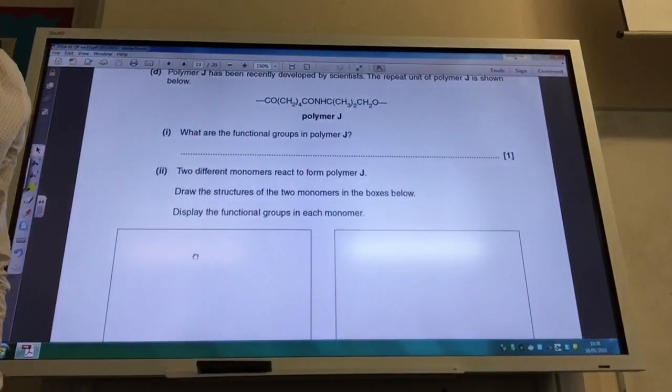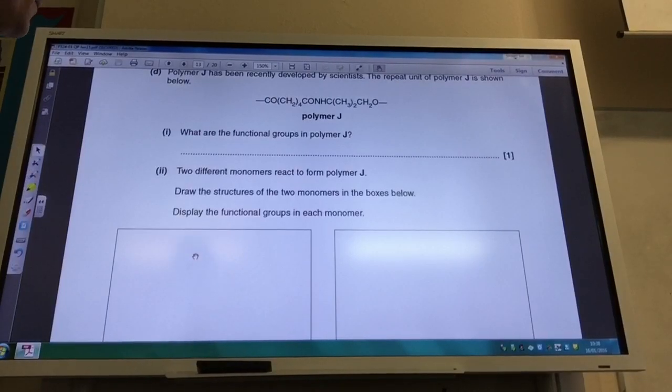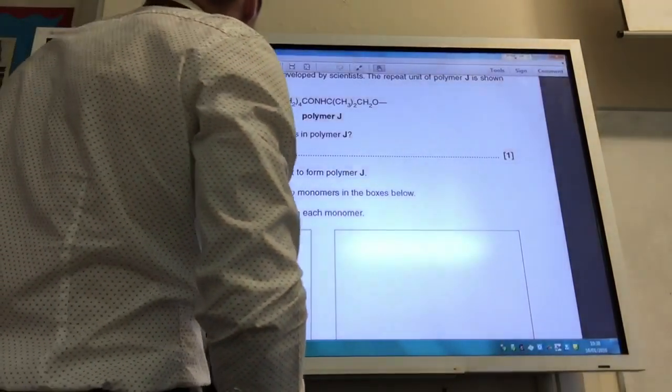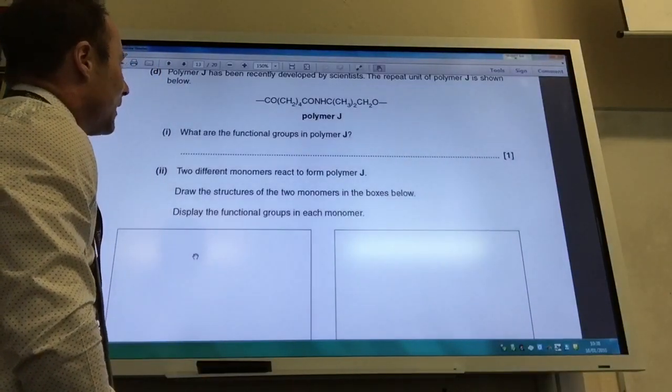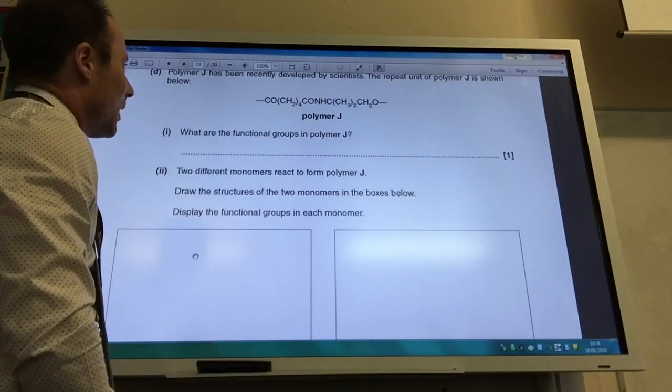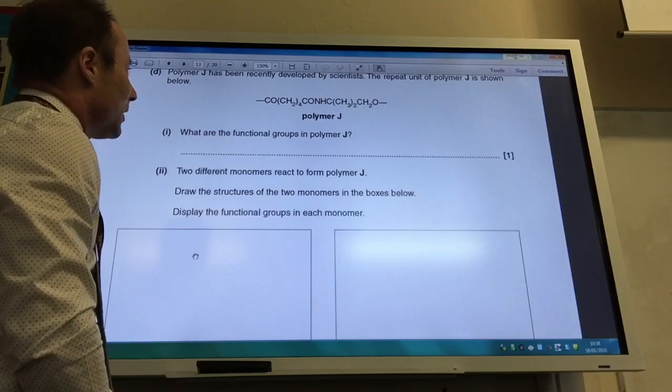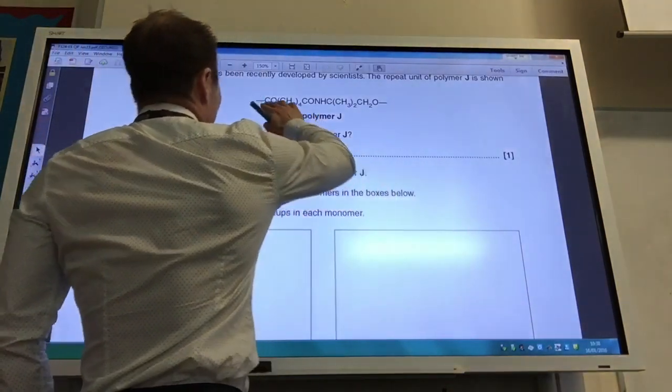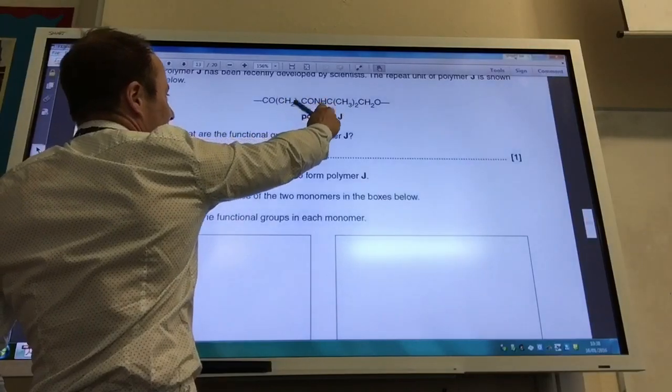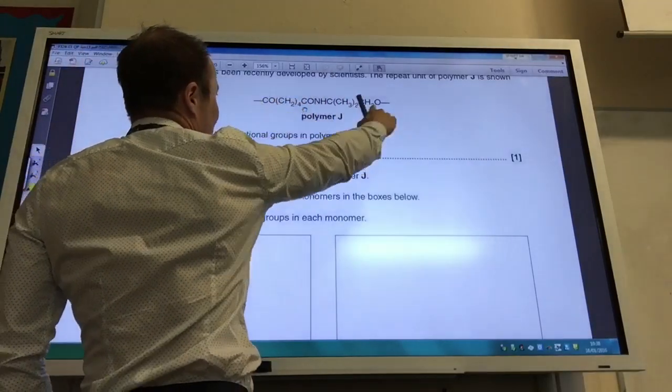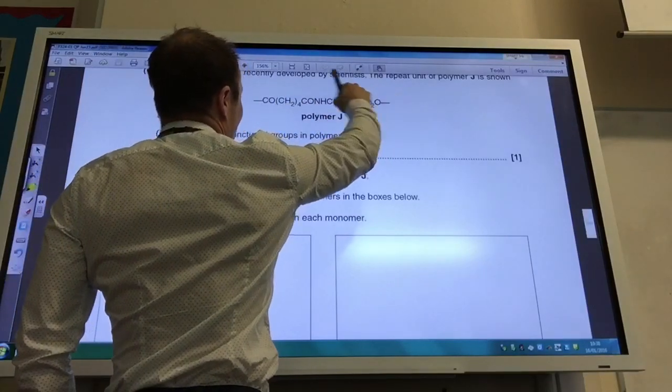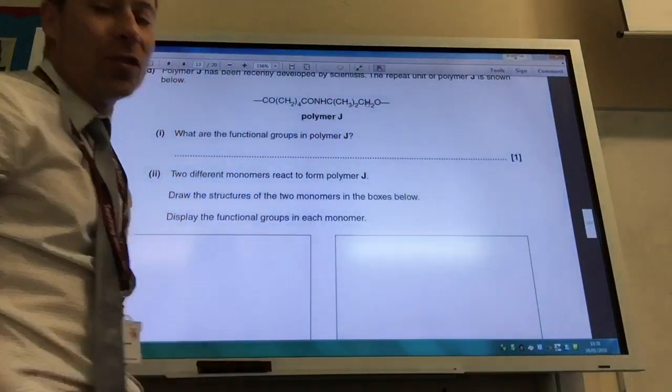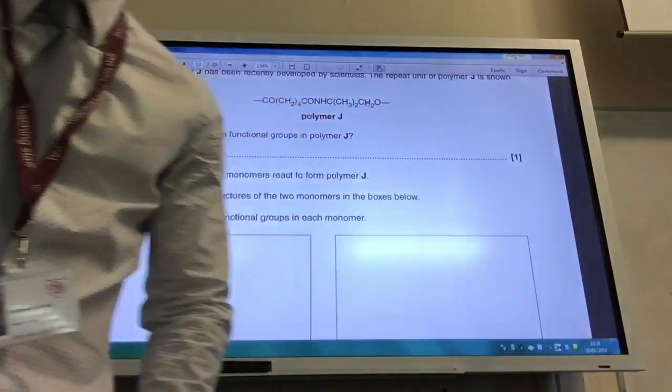Right. So more on polymers now. Polymer J recently developed. The repeat unit is shown below. What are my functional groups in Polymer J? Okay. Well, let's have a look. It looks like we are going to have, this is going to be an amide group, isn't it? And then this guy here, you've got C double bond O here and CO there. So that's your ester link. So you've got an amide and an ester for that.